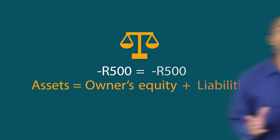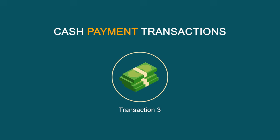Payments that have the effect of decreasing the Owner's Equity are called expenses. In this case, the relevant expense is Advertising. Minus R500 equals minus R500, which equals zero — the equation is correct. Great work, Grade 8 learners! Let's move on to the last transaction.